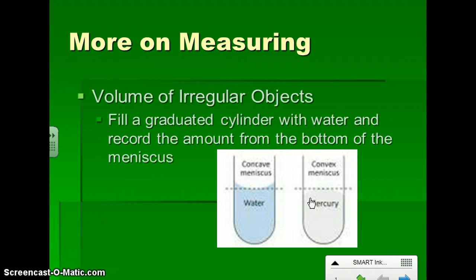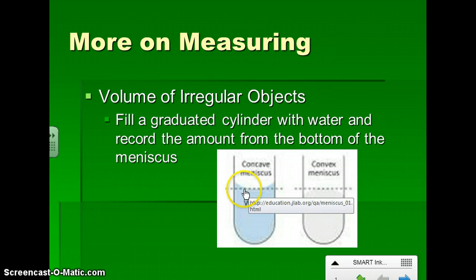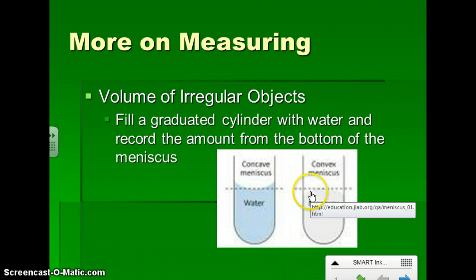So, back to measuring. When we measure the volume of an irregular object, we're going to use a process called water displacement. So we'll fill a graduated cylinder with water, and record them out from the bottom of the meniscus. Water has a high surface tension, so it will tend to creep up the sides. Conversely, mercury actually dips down, and its meniscus is higher. But water has a concave meniscus.